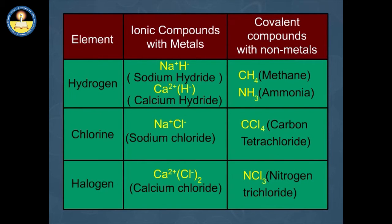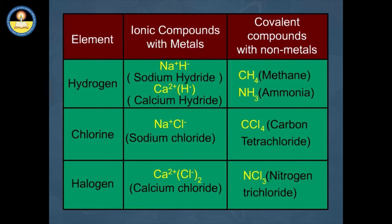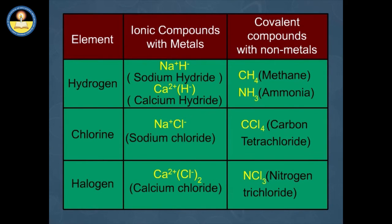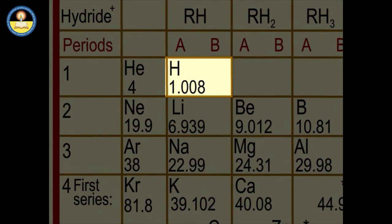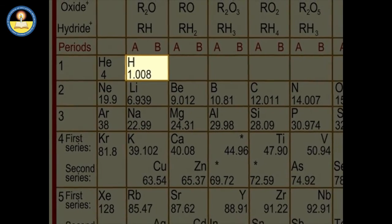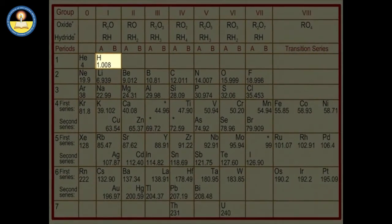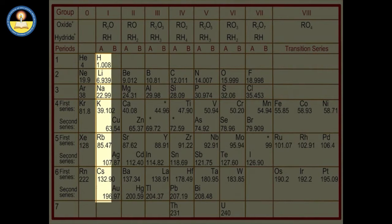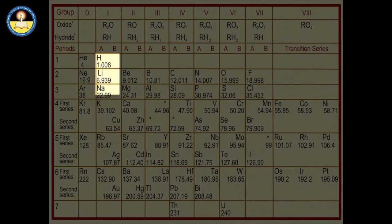Hydrogen forms ionic compounds with metals and covalent compounds with non-metals, as shown on screen. In other words, the position of hydrogen in the periodic table is controversial — no fixed position can be assigned to hydrogen in the periodic table. Even so, placement of hydrogen along with alkali metals seems to be more appropriate because it is the first element in the periodic table and has the lowest atomic mass.